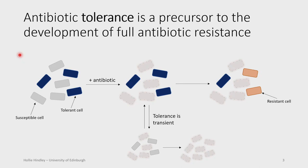Tolerance is reversible — it's a transient process. But resistance is an irreversible process, so once we've reached this stage, it's too late. So we want to learn more about this tolerance and why it occurs to hopefully stop the development of full-blown antibiotic resistance.